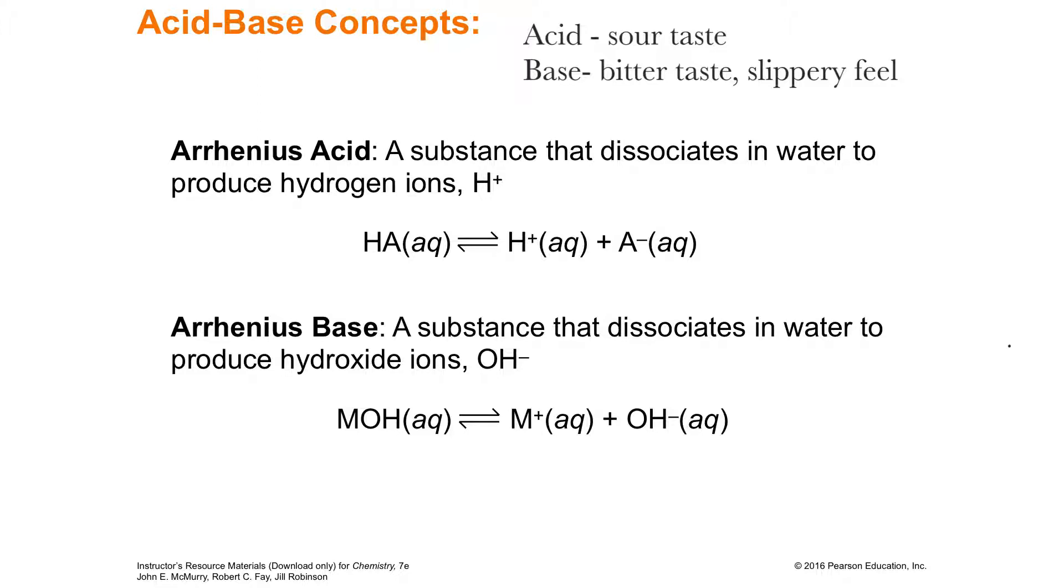When a Swede named Arrhenius was the first to kind of propose a theory of how acids and bases worked. So we're going to see that there's two huge types of reactions in chemistry. There's acid-base chemistry, and there's oxidation-reduction chemistry. So this is an enormous, enormous number of chemical reactions are considered acids and bases.